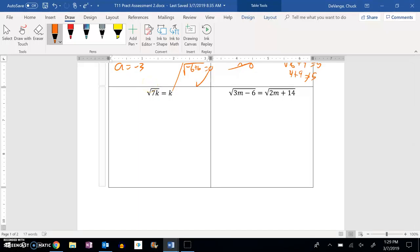So for this fifth one, we're going to square both sides. So we get k squared equals 7k. Subtract 7k from both sides. So 0 equals k squared minus 7k.